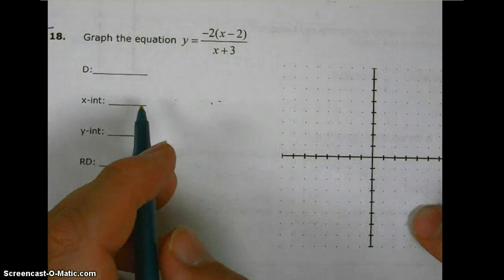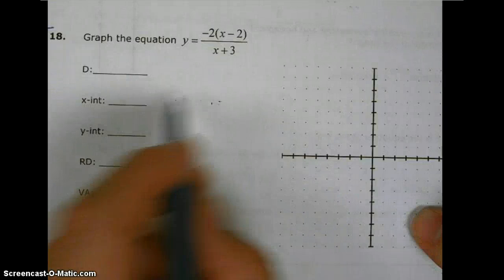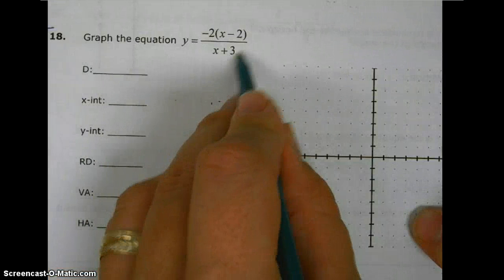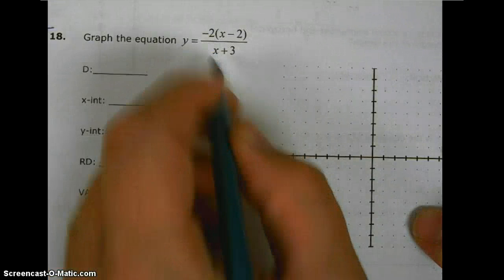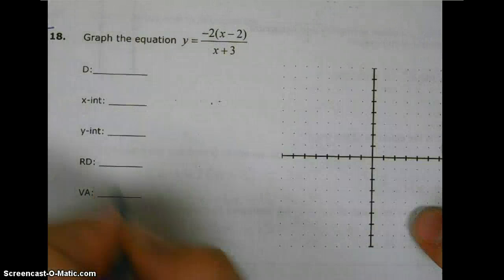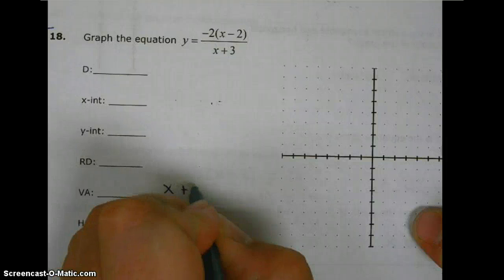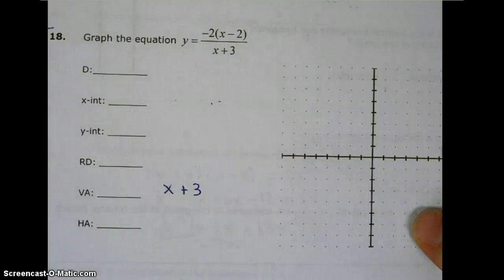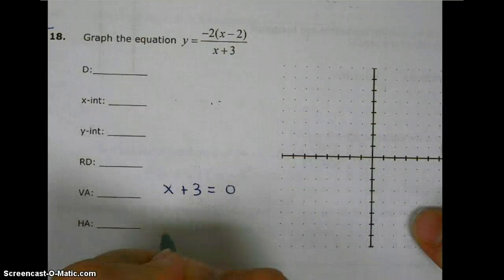First important information is the vertical asymptote. To find the vertical asymptote, we take the denominator and set it equal to zero, and then we solve.